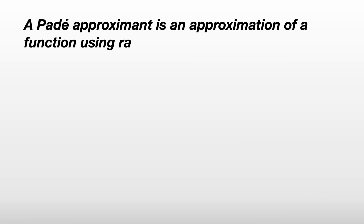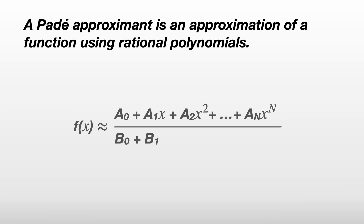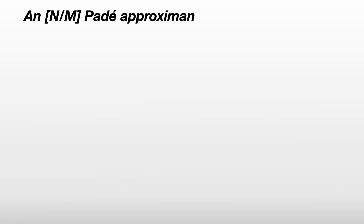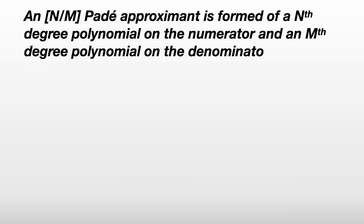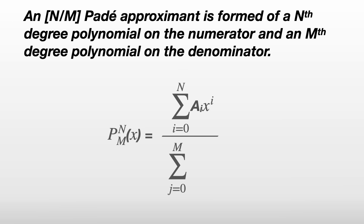A Padé approximant is an approximation of a function using rational polynomials — that's one polynomial divided by another. An n over m Padé approximant is formed of an nth degree polynomial on the numerator and an mth degree polynomial on the denominator, and it's sometimes written as capital P with subscript m over n.